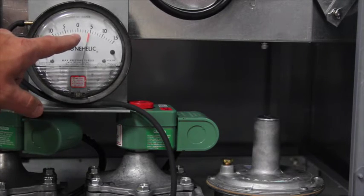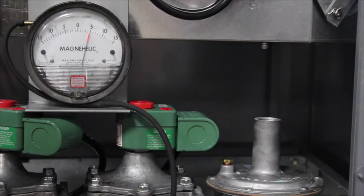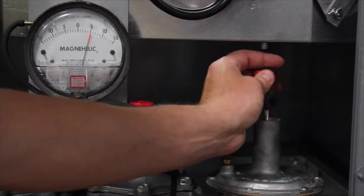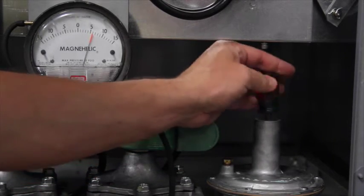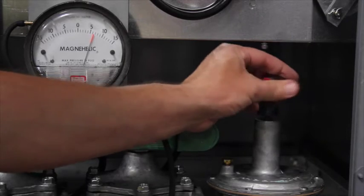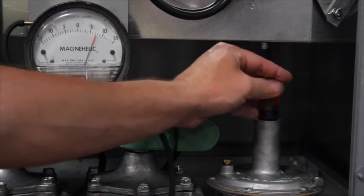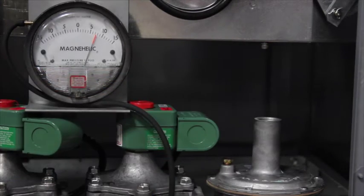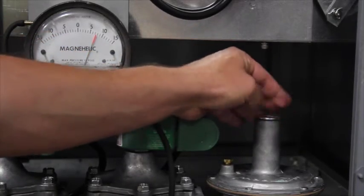Now you must look at the nameplate and adjust the unit regulator to the nameplate manifold differential pressure. Remove the cap on the regulator and turn it clockwise until you reach your nameplate setting. Once you have matched your nameplate setting, reinstall the cap on the regulator.